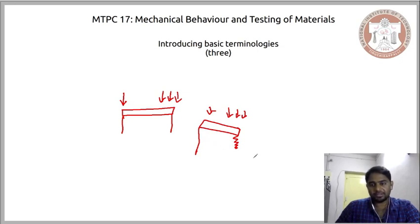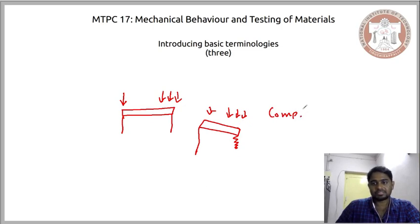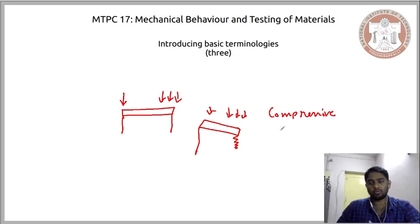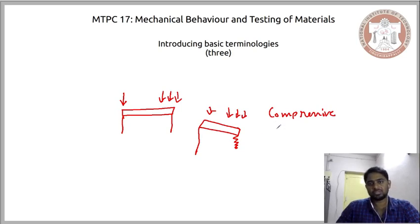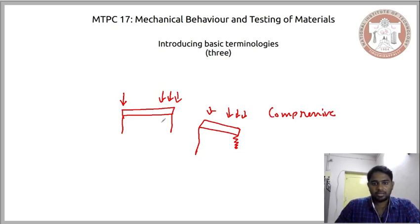In technical terms, the load that shrinks this rear leg is called compressive load. You might have already come across this term — it simply means compressing the leg. Compressive load is what allows your leg to get shrunk, and that is what we observe at the rear.